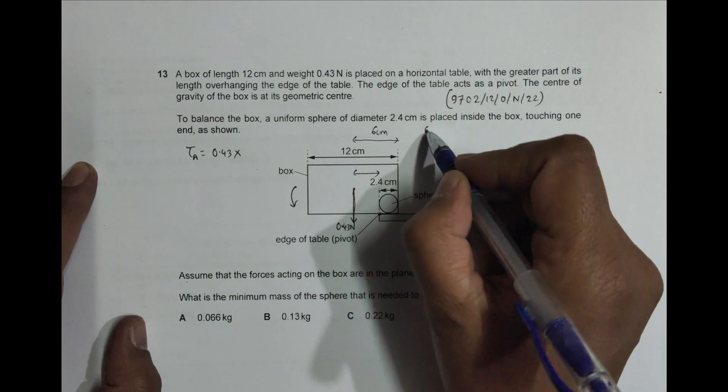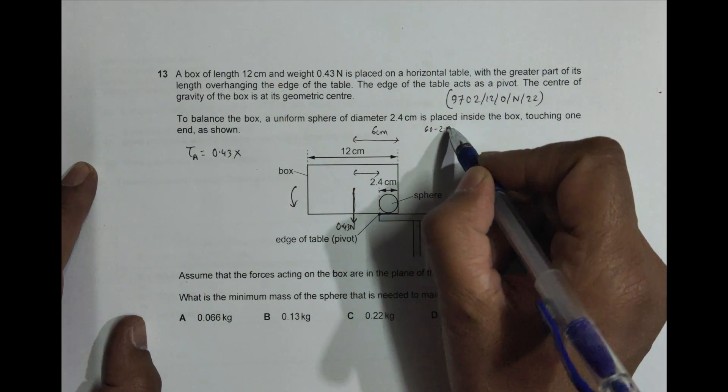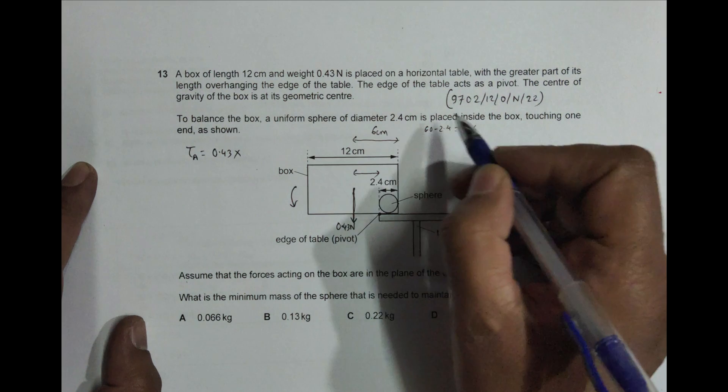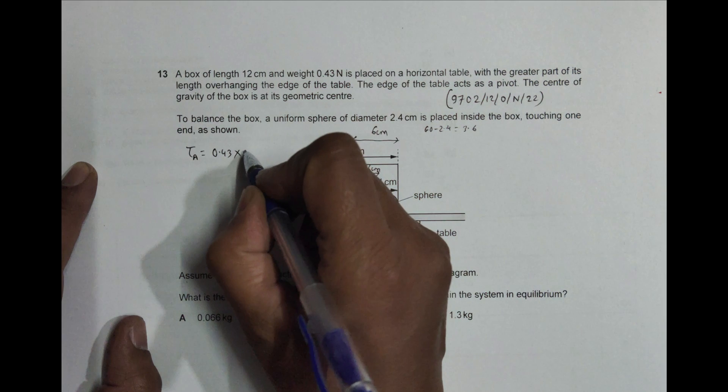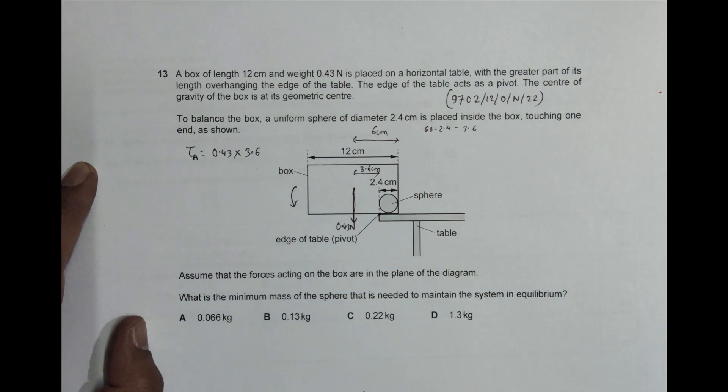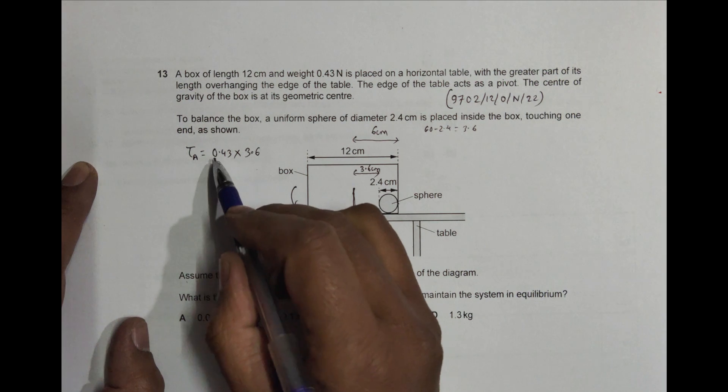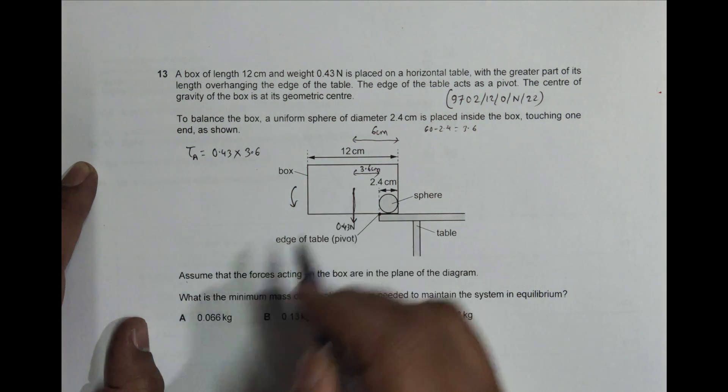So tau_a equals this into 3.6. So tau_a equals 0.43 Newton into 3.6 centimeters like this.